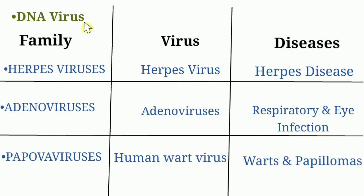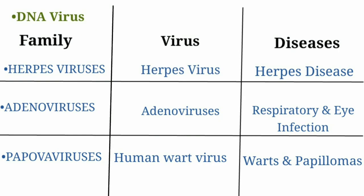Now moving on to DNA viruses of medical importance. First is the Herpesviruses family — herpes viruses cause herpes disease. Second is Adenoviruses — adenoviruses cause respiratory and eye infections.